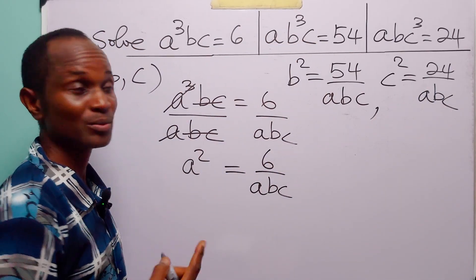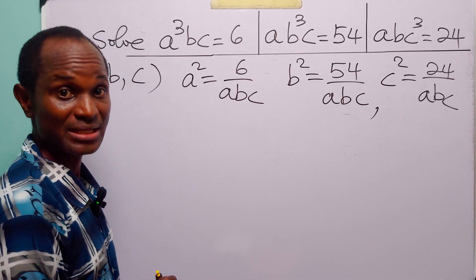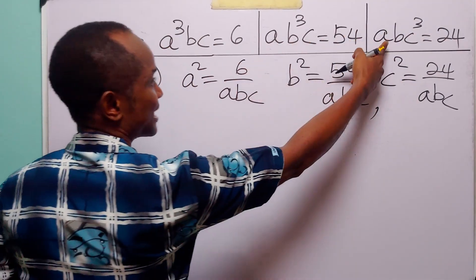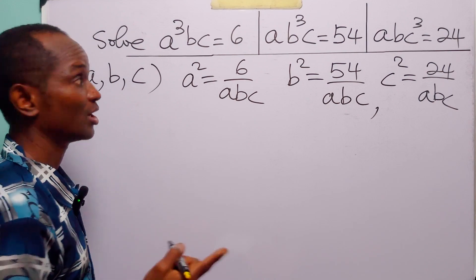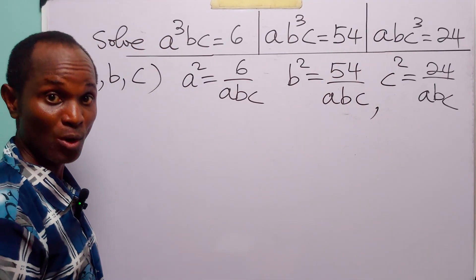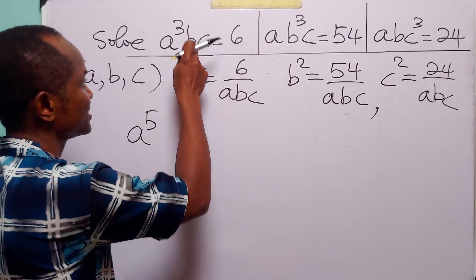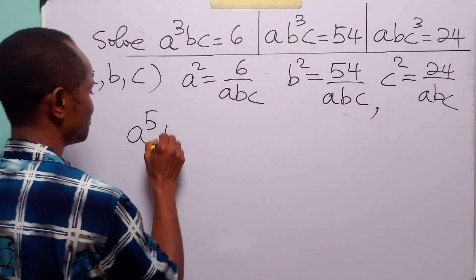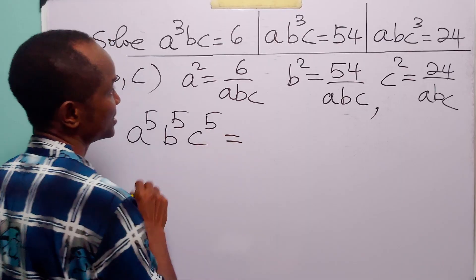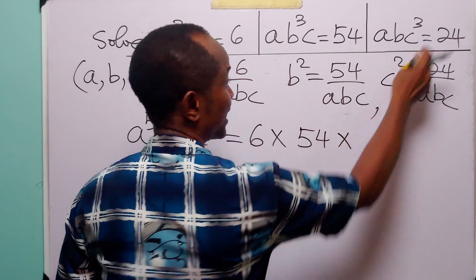Now the question becomes: how do we find A times B times C? To find A times B times C, we are going to multiply these three equations together. We have A cubed times A times A, that is A to the power 5, because we have power 3 plus power 1 plus power 1, and 3 plus 1 plus 1 is equal to 5. The exact same thing happens with B — this is B times B cubed times B, that is B to the power 5. And C times C times C cubed is C to the power 5. This is equal to 6 times 54 times 24.